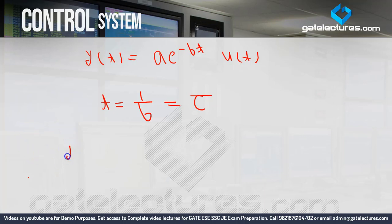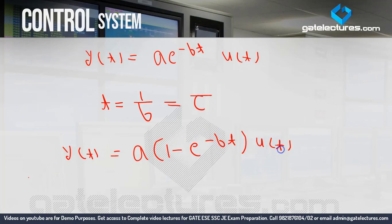Suppose you are given y(t) = A·(1 − e^(−bt))·u(t). In this equation there is also a constant term, but you don't need to look at that. You only need to check whether there is an e^(minus) term in the equation. Yes, there is — so again your time constant will be 1/b. So whenever a time-domain equation is given, just create e^(−1) and find that value of t.